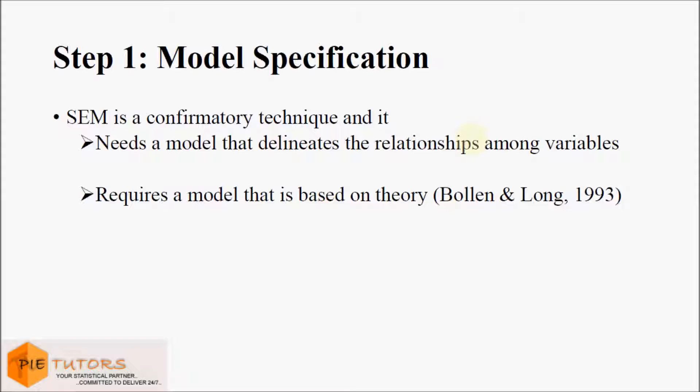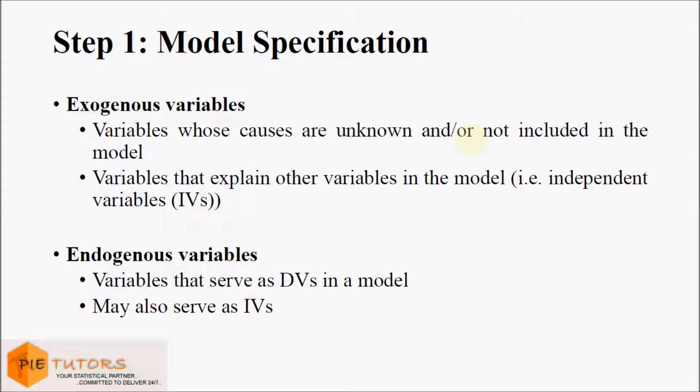Model specification is the most important step of the five steps mentioned earlier. SEM is a confirmatory technique and we are required to specify a model that delineates the relationship between variables, which we get from past research studies. The model we are testing should be based on theory. We have two types of variables: endogenous variables and exogenous variables.